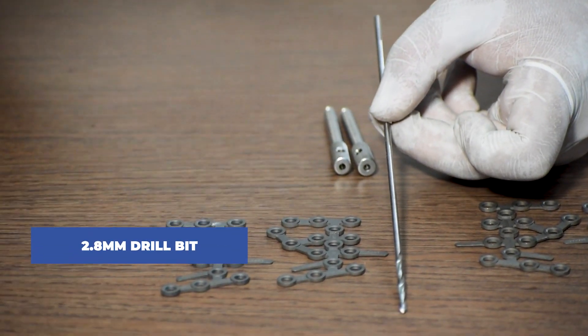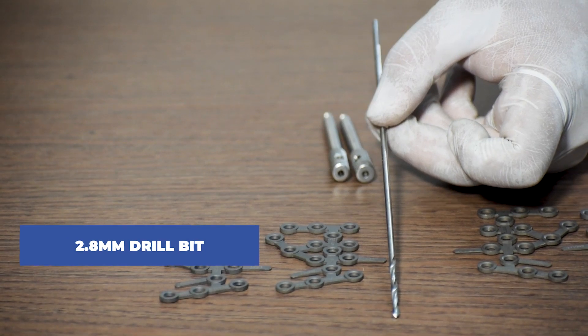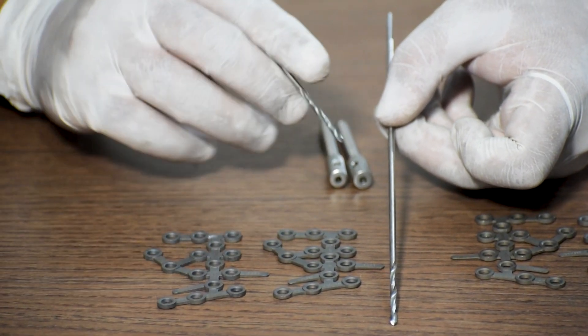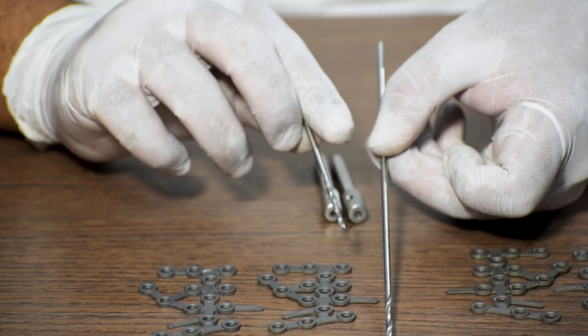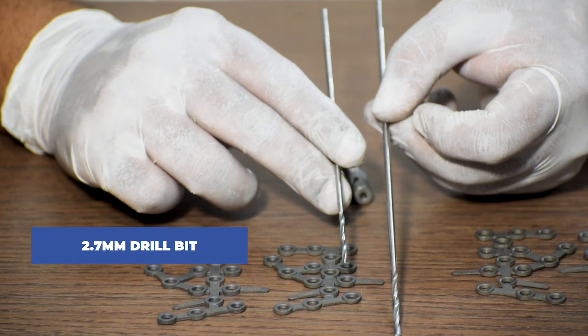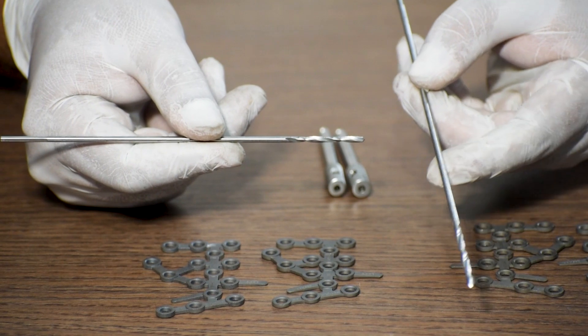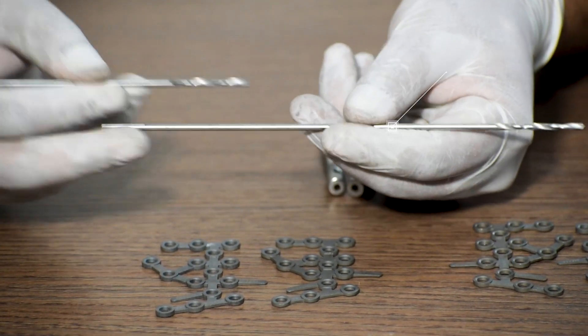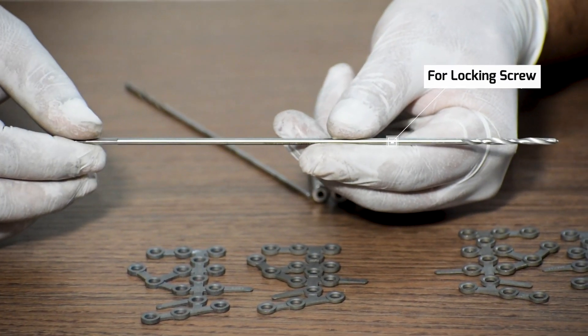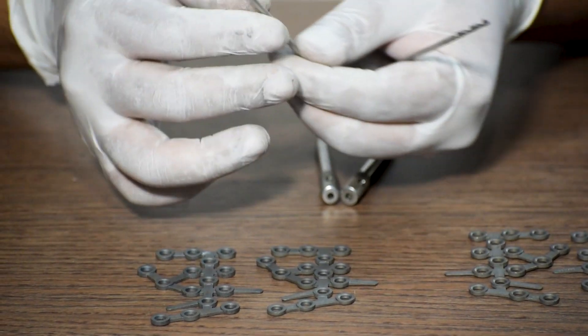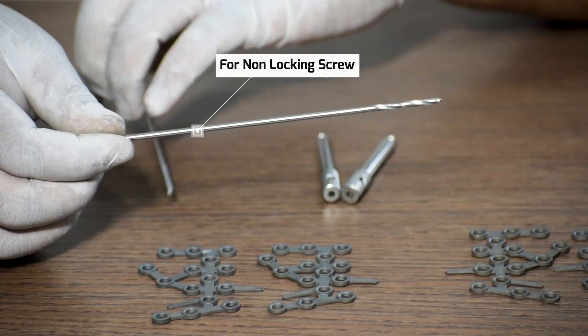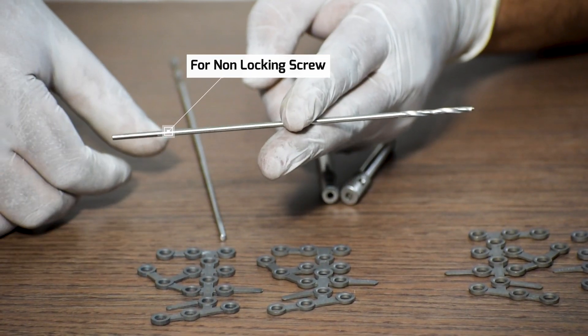Then for locking screw, 2.8 mm drill bit. And for non-locking 3.5 mm cortical screw and for 4 mm cancellous screws, 2.7 mm drill bit is required. Remember 2.8 mm drill bit for locking screws and 2.7 mm drill bit for non-locking screws.